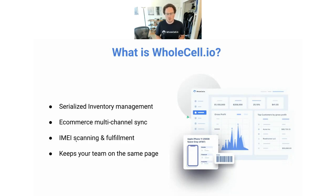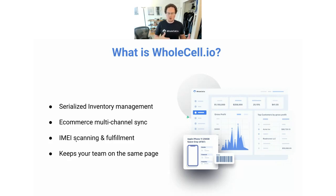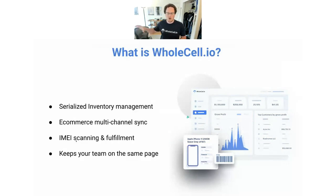With e-commerce and multi-channel sync, one of the unique things about Wholesale is that you can scan IMEIs. It's built around mobile devices that have IMEIs and serial numbers. You can scan barcoded IMEIs and fulfill onto specific orders the exact IMEIs of the devices that you are selling. When you put inventory into Wholesale, you put it in with the IMEI, or update it later, and when orders come in through your e-commerce channels, you fulfill those specific items so you know which IMEIs went where.